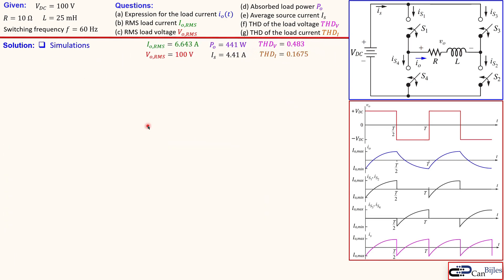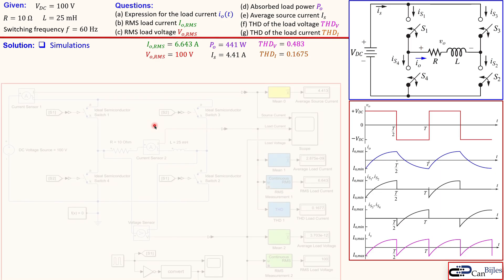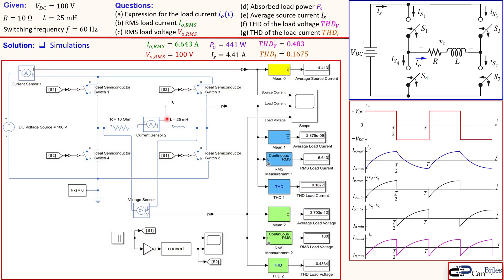We have now completed the necessary calculations. Let's also look at the simulations. This is the circuit in MATLAB Simulink, showing the resistor and inductor in series combination, the DC voltage source, and the four switches. S1 switches are on during the first half of the PWM cycle, and the S2 pair is on during the second half.